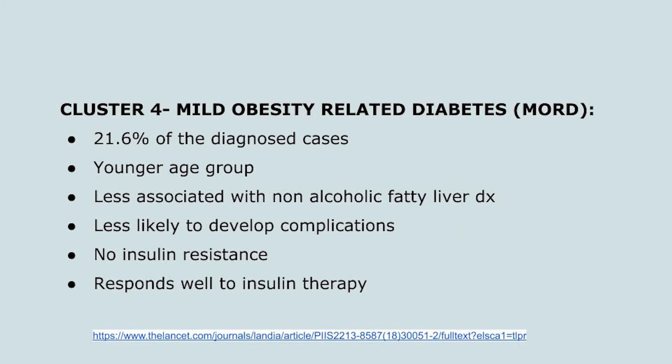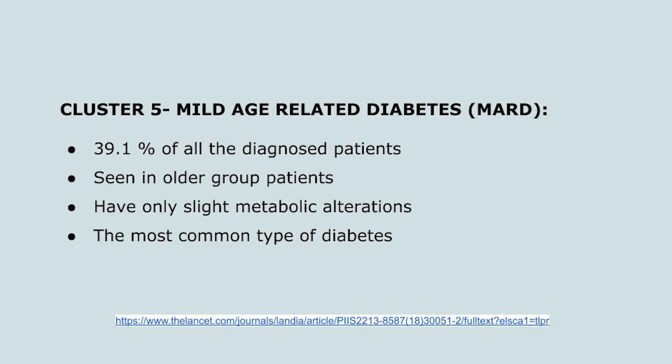Cluster 4, mild obesity related diabetes, is one of the two milder types. 21.6% of diagnosed patients were in this category. They were comparatively younger, less associated with fatty liver disease, and less likely to develop complications. They had no insulin resistance and were very responsive to insulin therapy.